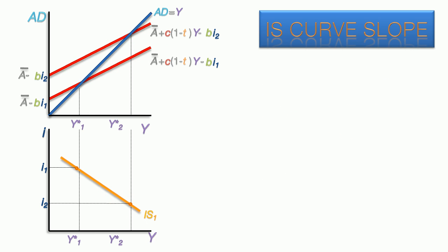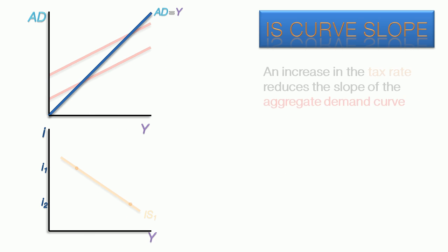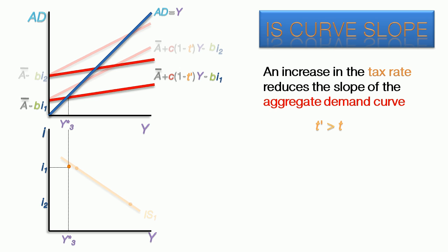The last determinant of the slope is the tax rate. An increase in the tax rate reduces the slope of the aggregate demand curve. T prime will represent the higher tax rate. The flatter aggregate demand curves produce an IS that is steeper as a result of the increased tax.